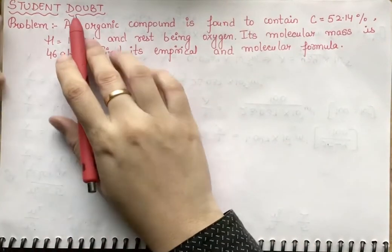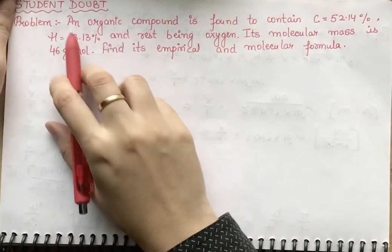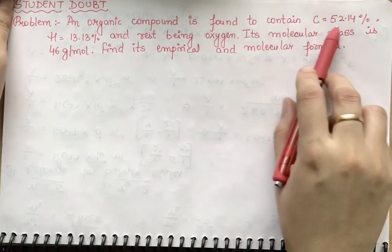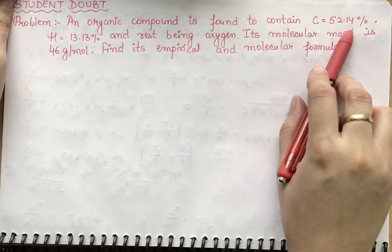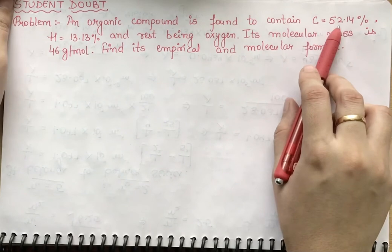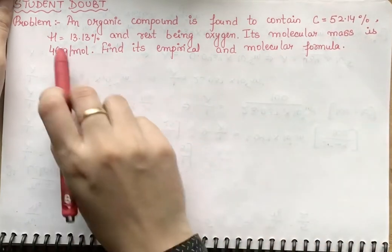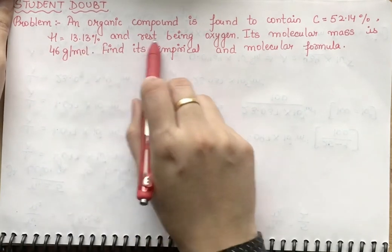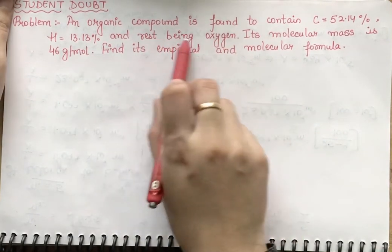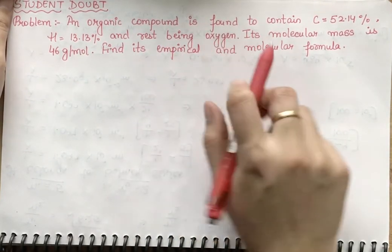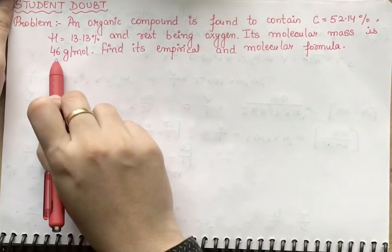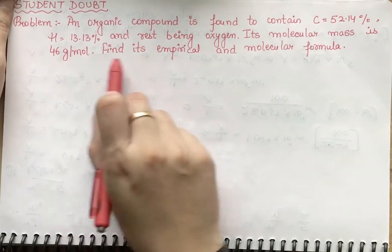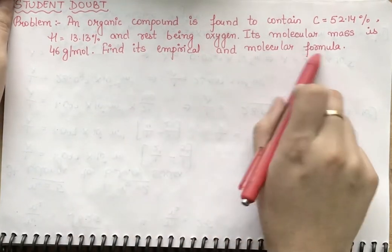A student has a doubt and asked: An organic compound is found to contain C = 52.14%, H = 13.13%, and the rest being oxygen. Its molecular mass is 46 grams per mole. Find its empirical and molecular formula.